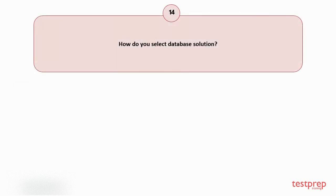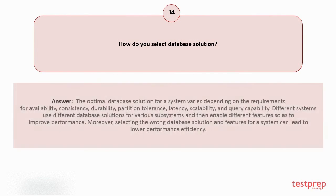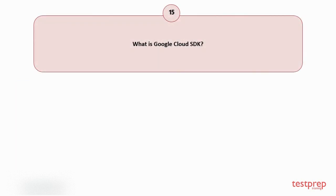Question number fourteen: How do you select a database solution? The optimal database solution varies depending on requirements for availability, consistency, durability, partition tolerance, latency, scalability, and query capability. Different systems use different database solutions for various subsystems and enable different features to improve performance. Selecting the wrong database solution and features for a system can lead to lower performance efficiency.